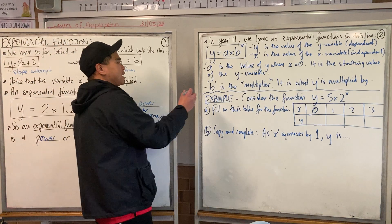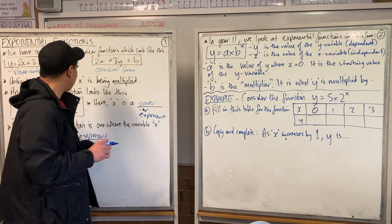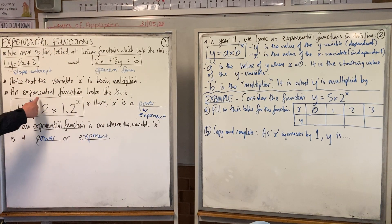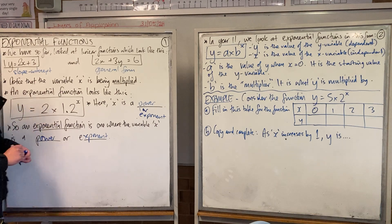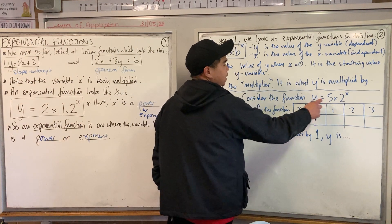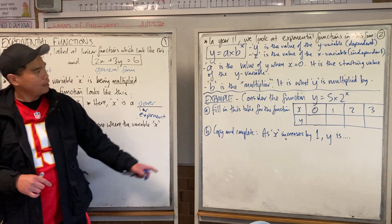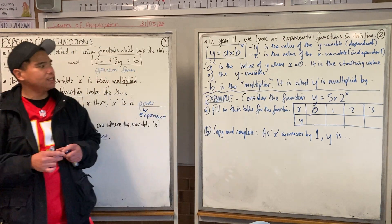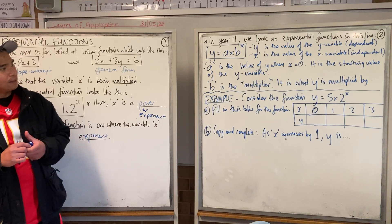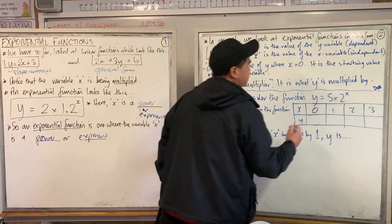You can think of a as the starting value of the y variable. So here, where does y start? y is going to start at 2. This one here — what is a? a is 5, so what's y going to start at? At 5. And then b is the multiplier — it is what y is multiplied by over and over again.